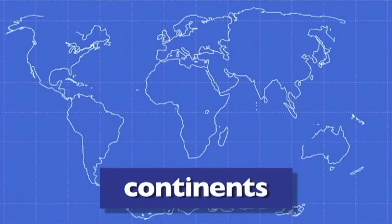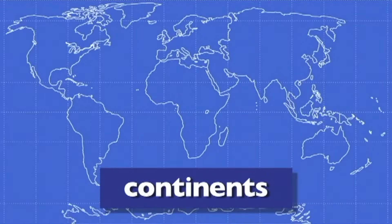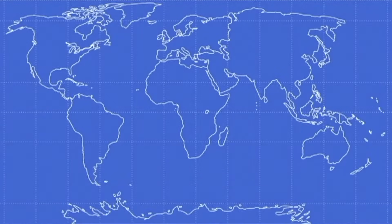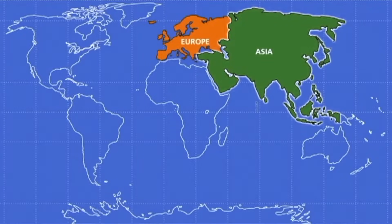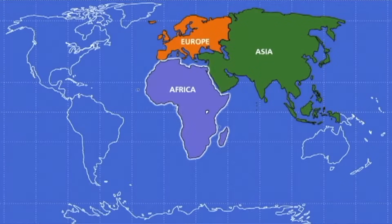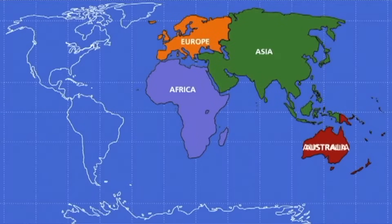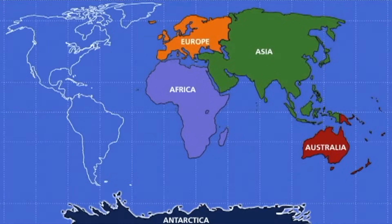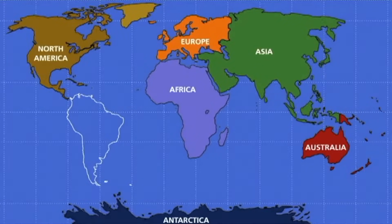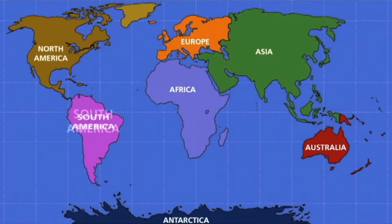The largest land areas on Earth are called continents. There are seven continents. Looking at this map, we can locate all seven continents: Europe, Asia, Africa, Australia, Antarctica, North America, and South America.